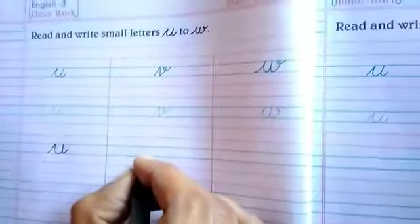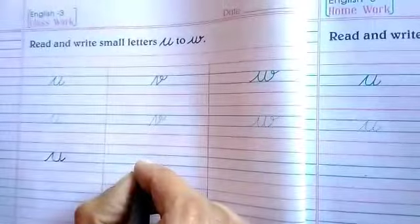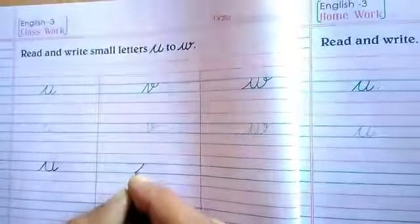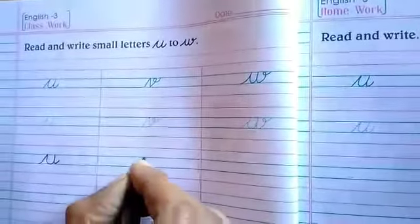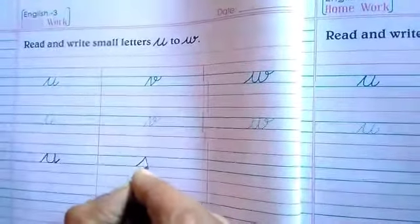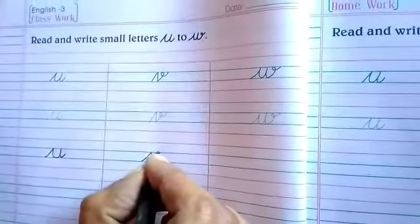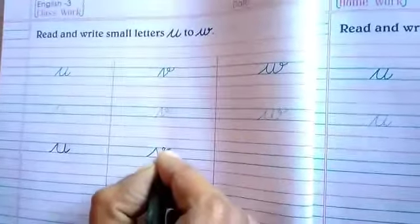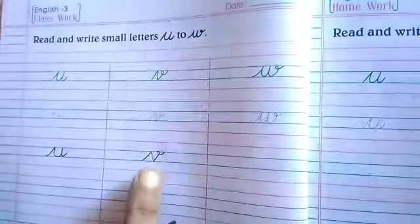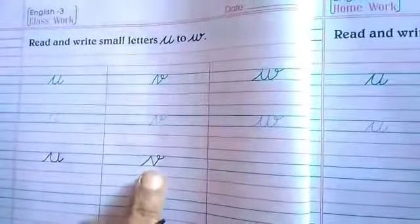For letter V: make a small slanting line from the third line to the second line, one more slanting, one more slanting, and a curve line. This is V.